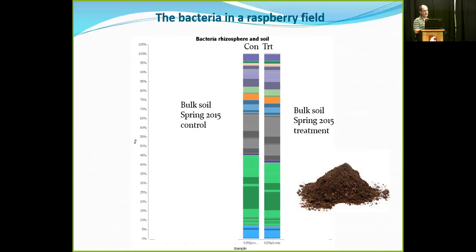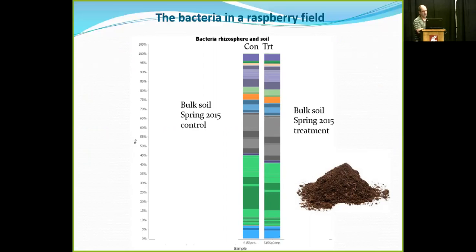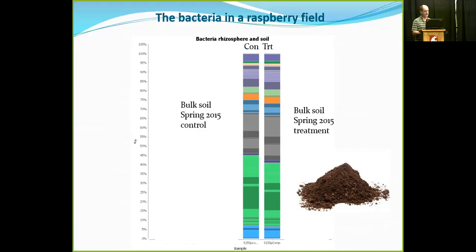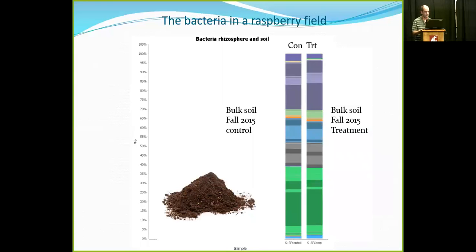Looking at the real data — if you're the same color, you're in the same taxonomic group; different colors mean different underlying communities. Looking at bulk soil bacteria from spring 2015, there's not much difference between the control and treatment — no statistical difference. This goes with what we know: it's hard to change the bulk soil microbial community with minor inputs. Jumping to fall, it looks even more similar — almost identical between control and treatment. Though boring in terms of treatment effect, the good news is reproducibility is very good.